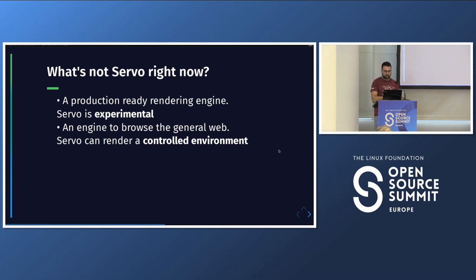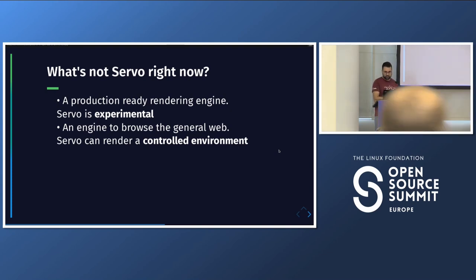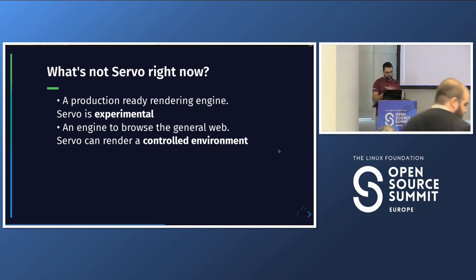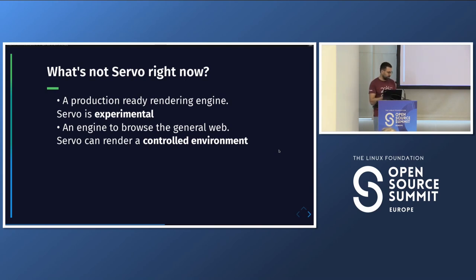What is Servo NOT right now? It's not a production-ready rendering engine — it's an experimental project and has been experimental the whole time. That has positives: you can experiment with new web standards. But it's not ready for production and cannot browse the general web, which would need a huge investment. However, Servo can render a controlled environment: if you have components using HTML and CSS features that work on Servo, you can probably create an application with Servo underneath.